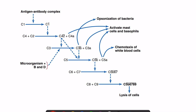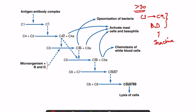The complement system consists of more than 30 proteins. Among these, the most important are 11 proteins: C1 to C9, Factor B, and Factor D. This is a system in which these proteins exist as inactive enzymes — they are like enzyme precursors and need to be activated by some stimulus.